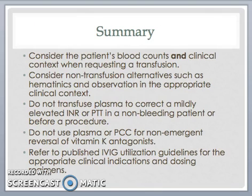In summary, we should consider the patient's blood counts and clinical context when requesting a transfusion. We should consider non-transfusion alternatives such as hematinics and observation in the appropriate clinical context. We should not transfuse plasma to correct a mildly elevated INR or PTT in a non-bleeding patient or before a procedure. We should not use plasma or PCC for non-emergent reversal of vitamin K antagonists. And finally, we should refer to published IVIG utilization guidelines for the appropriate clinical indications and their dosing regimens.